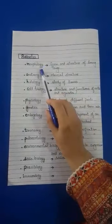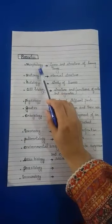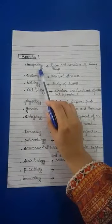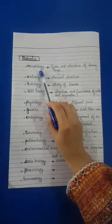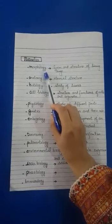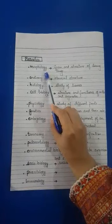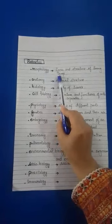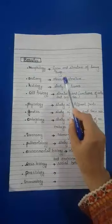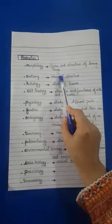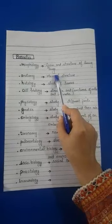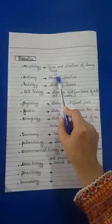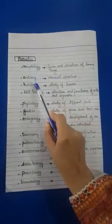Now we are moving towards branches of biology. These three divisions — Botany, Zoology, and Microbiology — are further classified into branches. The first branch is Morphology, which deals with the study of the form and structure of living things. Whenever you study the structure or formation of a living thing, it comes under the head of Morphology.